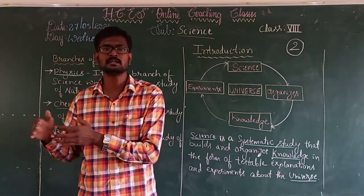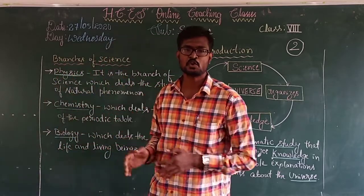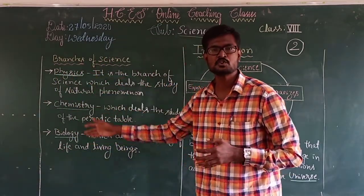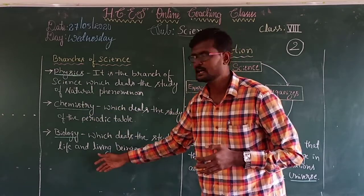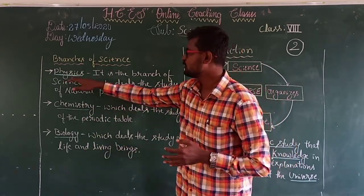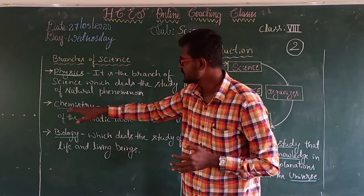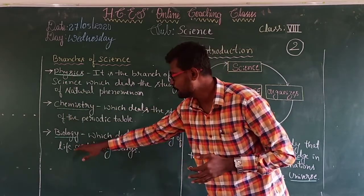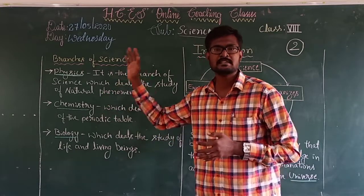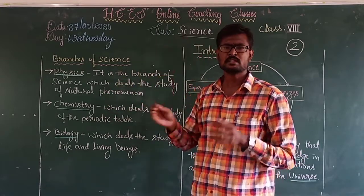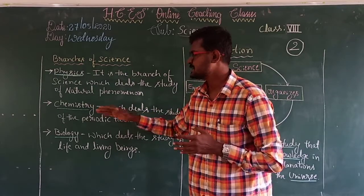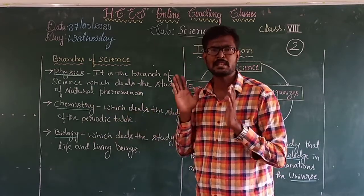Now let us move on to the branches of science. See here, these are the main branches of science which you are going to learn. The three main branches of science are physics, chemistry, and biology. Let us learn what physics, chemistry, and biology mean.